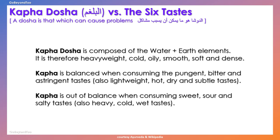The third dosha is the kapha dosha. Kapha is composed of the water and earth elements. It is therefore heavyweight, cold, oily, smooth, soft, and dense. Kapha is balanced when consuming pungent, bitter, and astringent tastes — also lightweight, hot, dry, and subtle foods. Kapha is out of balance when consuming sweet, sour, and salty tastes.